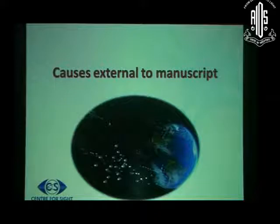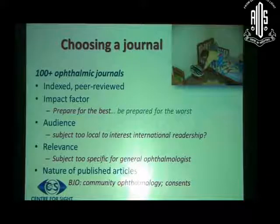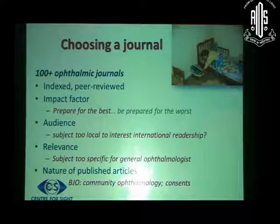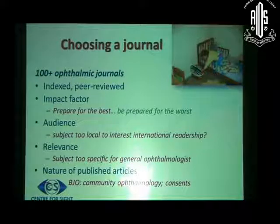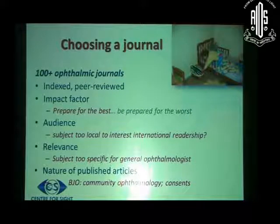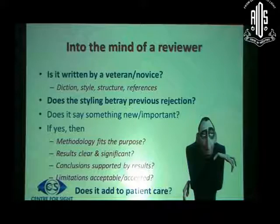What are the causes external to the manuscript? One is choosing the wrong journal. There are more than 100 journals to choose from among the indexed and adequate category. We generally prepare for the best, for the highest impact journal, but we have to be prepared for the worst. Sometimes our subject is too local for an international readership, and we are probably better off submitting to a local journal. Sometimes our subject is too specific, and so it should be submitted to a specialty journal rather than a general one. Sometimes we simply have to look at the nature of articles most frequently published in the journal.